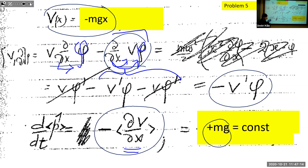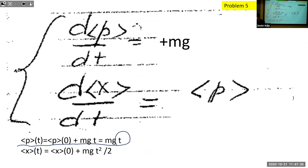So momentum changes at a constant pace mg, meaning it increases linearly in time. Position changes according to momentum, so integrating this coupled system: momentum grows linearly in time, and a second integration for position gives the classical result: (1/2) m·a·t², just as in classical mechanics.